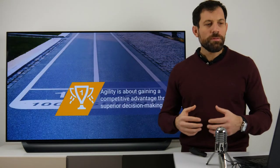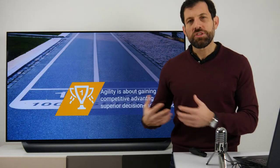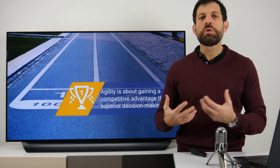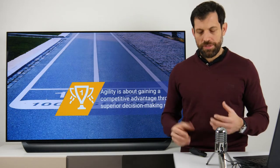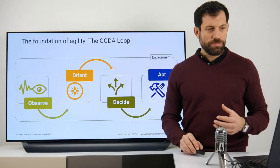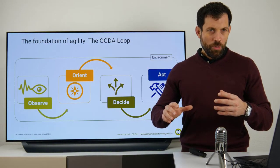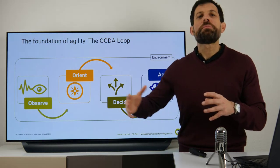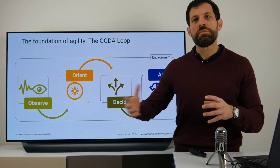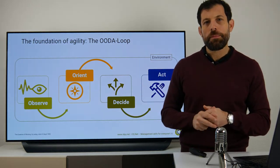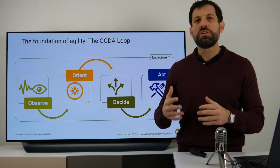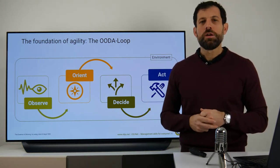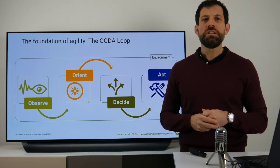Agility is about gaining a competitive advantage through a superior decision-making cycle. And when you look one step back, there is a logic behind this decision-making cycle. This decision-making cycle is called the OODA loop, which comes from John Boyd, who was a military strategist.